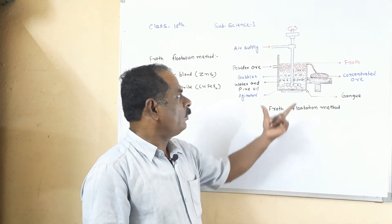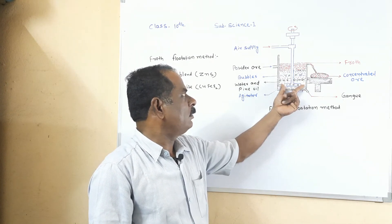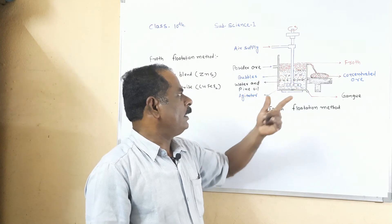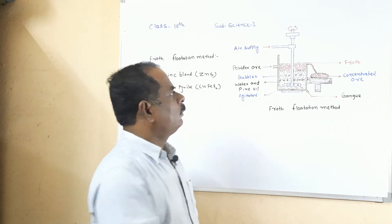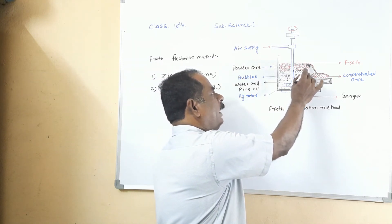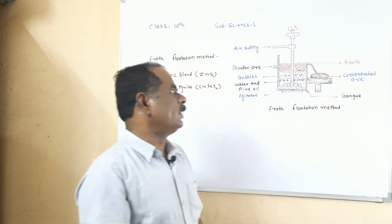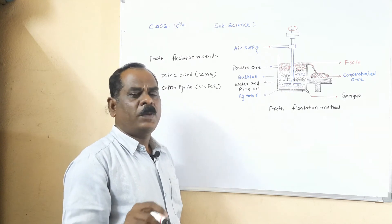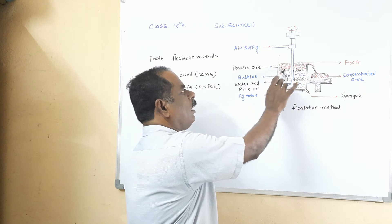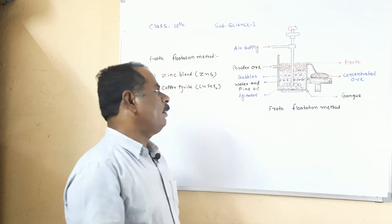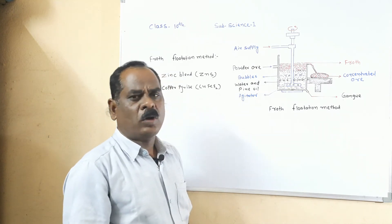The apparatus consists of one tank. At the center of the tank there is an agitator. The tank has one outlet at the bottom and on the upper side there is a way to collect the froth of the ores. First, take the powdered ore and add it to the tank, which contains a large quantity of water and a plant oil such as pine oil or eucalyptus oil.